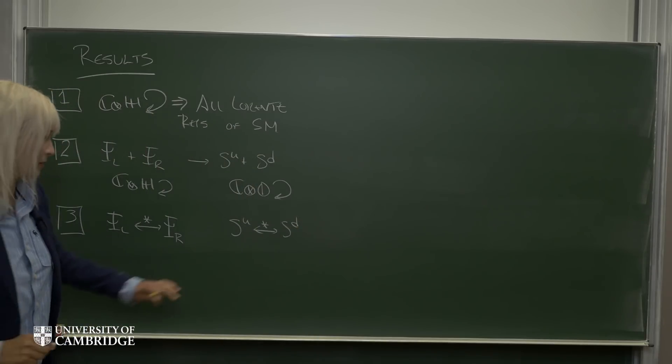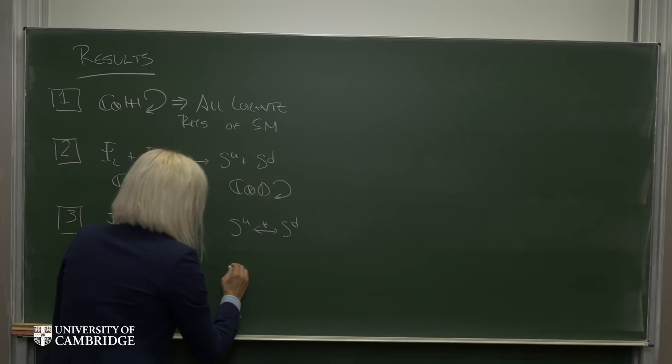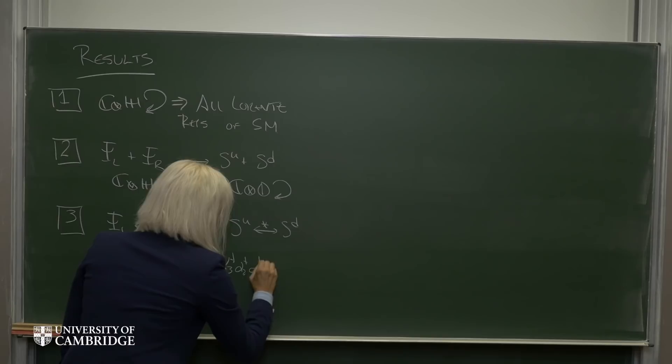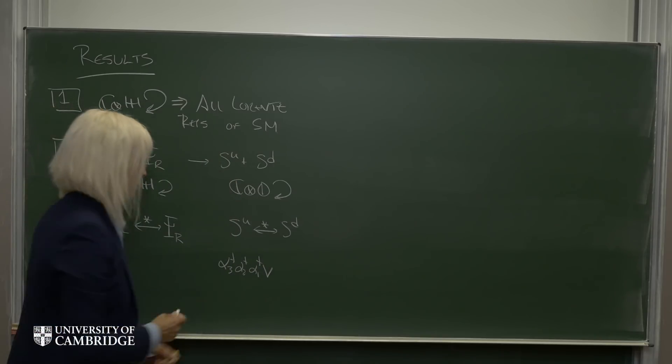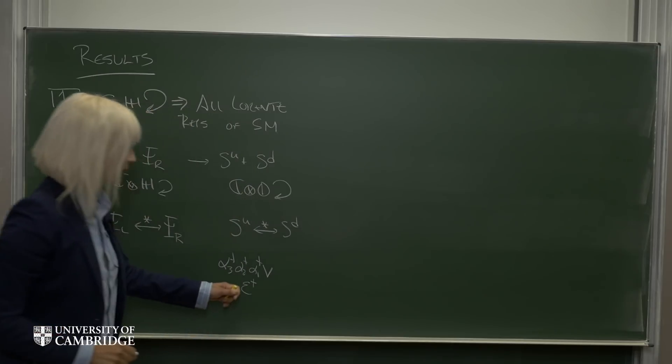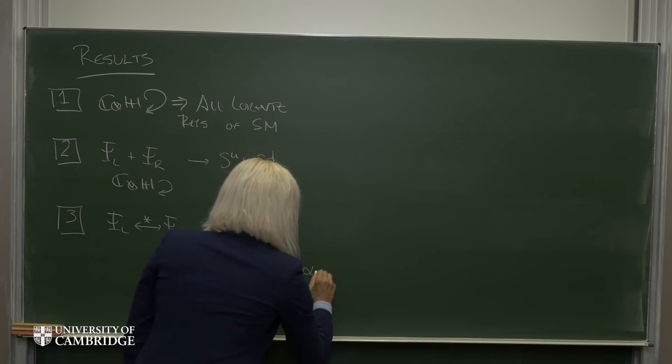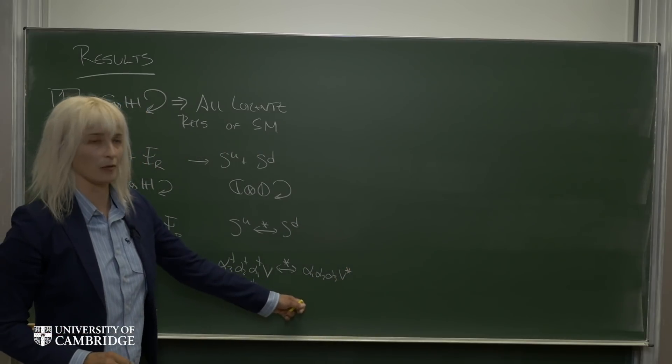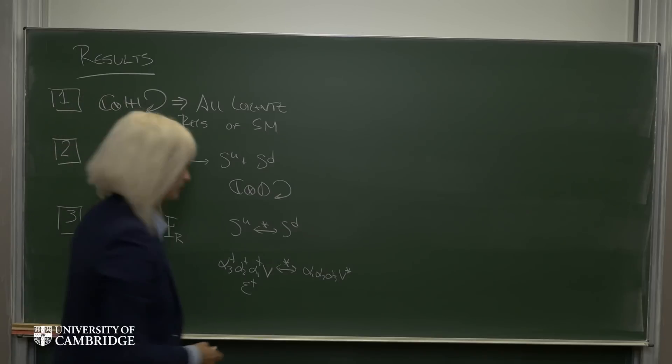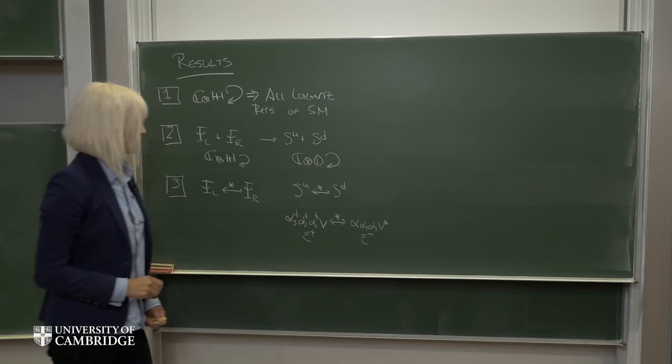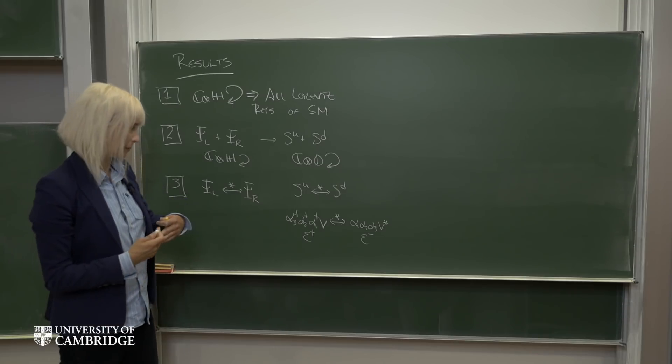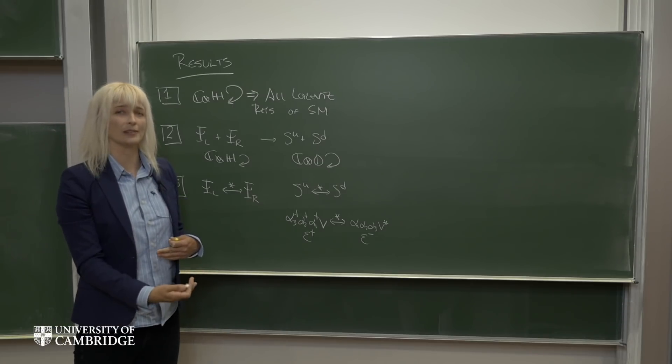For example, if I were to take the basis vector given by this, this corresponds to the positron, and if I were to take the complex conjugate of this, it would give me this basis vector, which corresponds to the basis vector of the electron. So in other words, in this formalism, in order to go between particle and antiparticle, all we need is the complex conjugate.